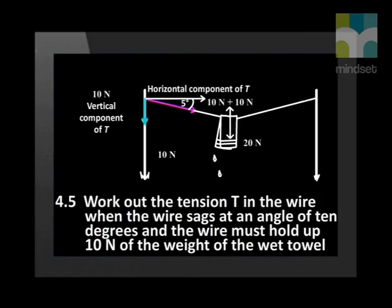As the angle theta gets smaller, tan theta also gets smaller. When you divide by a smaller and smaller number, the answer gets bigger and bigger. Here is a final challenge: work out the tension T in the wire when the wire sags at an angle of 10 degrees and the wire must hold up half the 20-newton weight of the wet towel. You will need a different trig function for this.